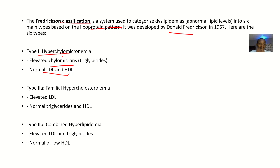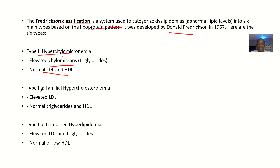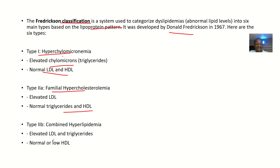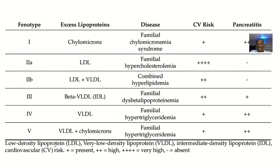Type 2 is divided into Type 2a and Type 2b. Type 2a is familial hypercholesterolemia, where there are elevated levels of low-density lipoproteins with normal triglycerides and normal high-density lipoproteins. Type 2b is combined hyperlipidemia, where you're having elevated levels of both low-density lipoproteins and triglycerides, while high-density lipoproteins could be normal or low.